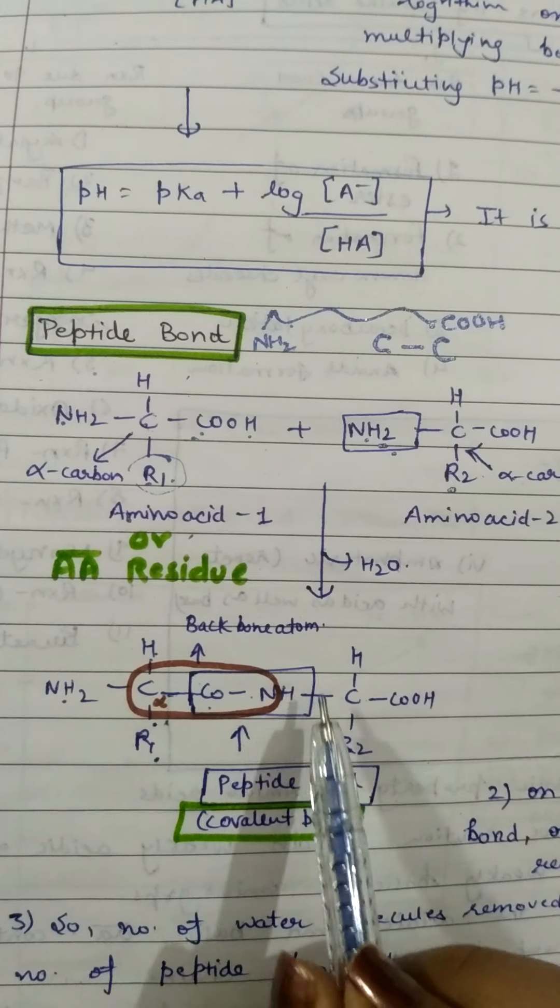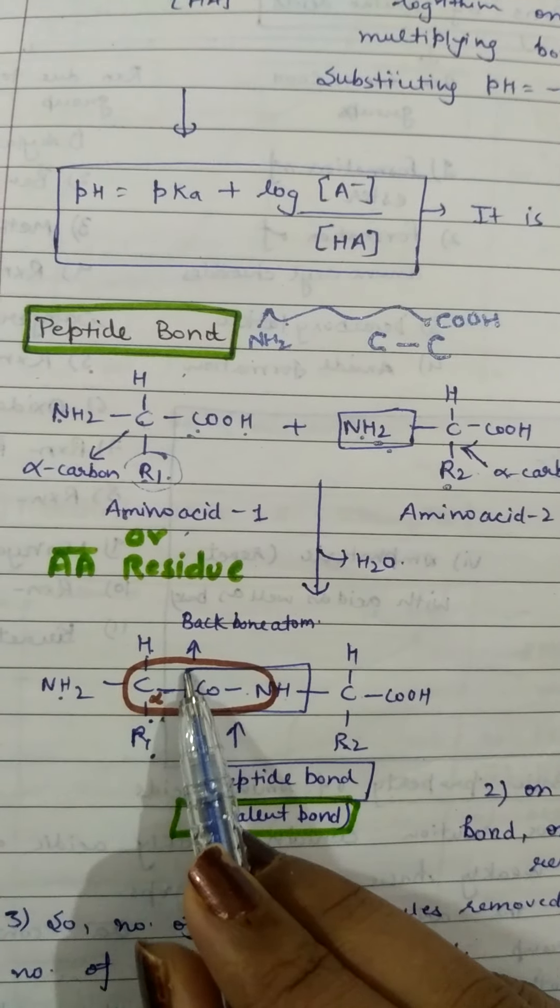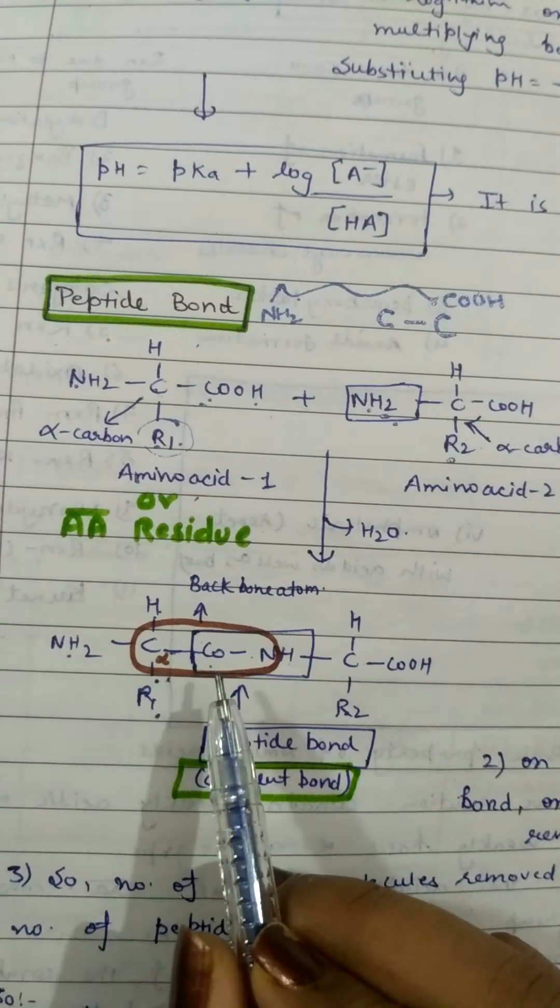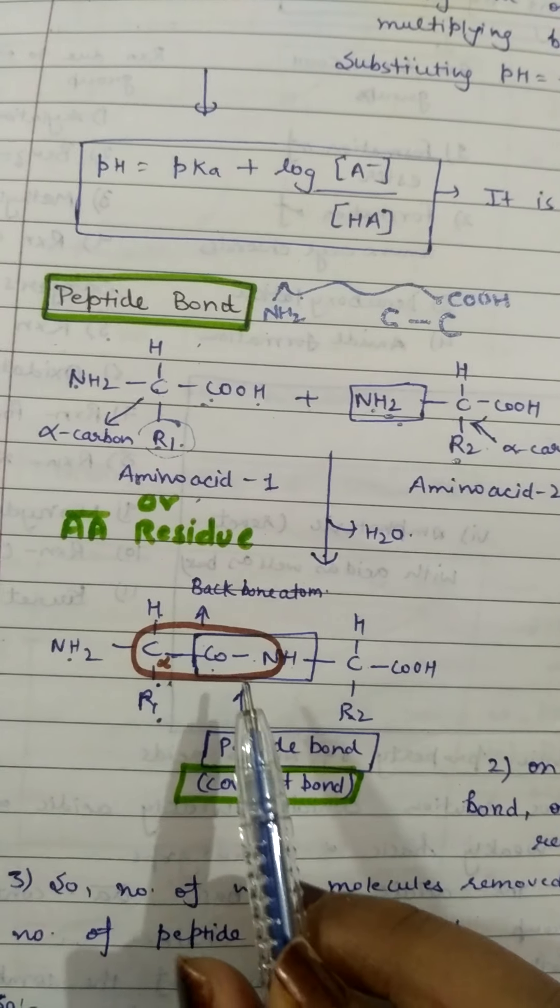What is this? This is peptide bond. Don't check the brown shade, just in the blue box. This is the peptide bond which is covalent in nature. Covalent bond is the peptide bond.